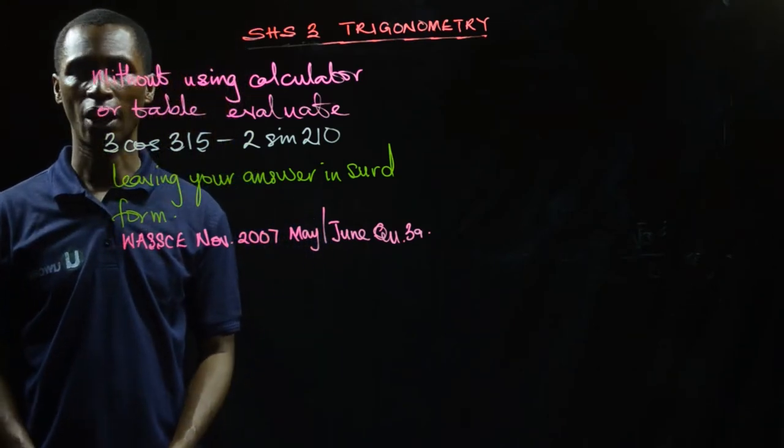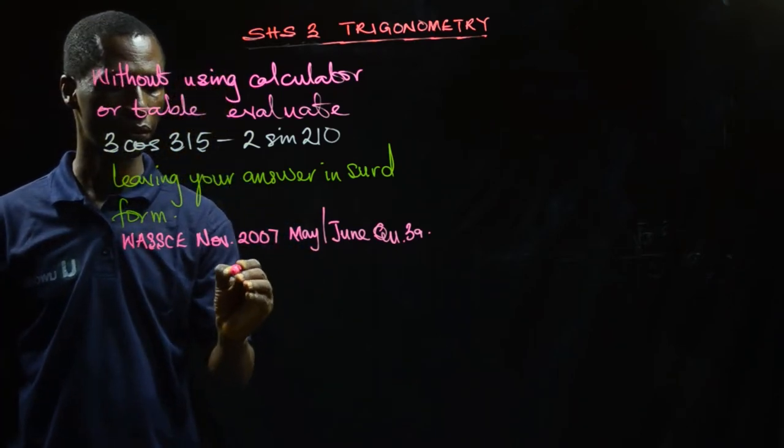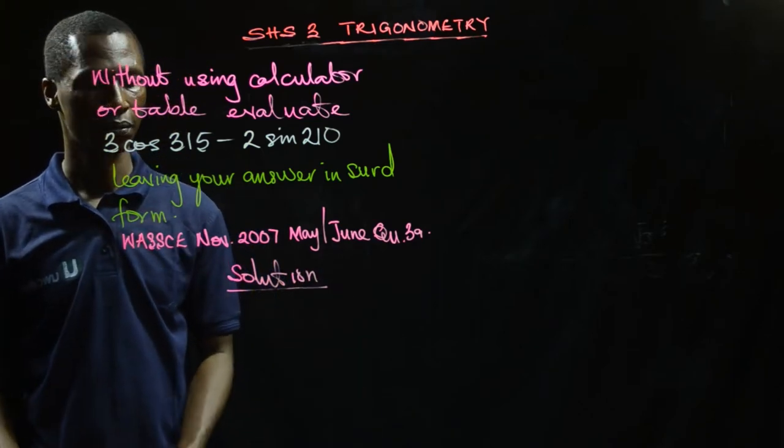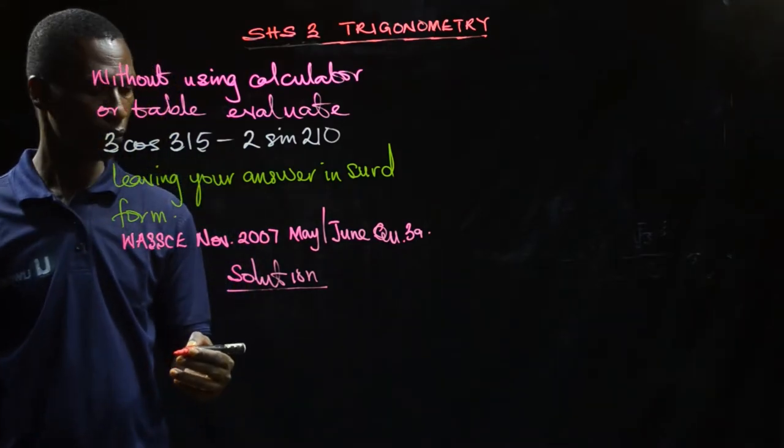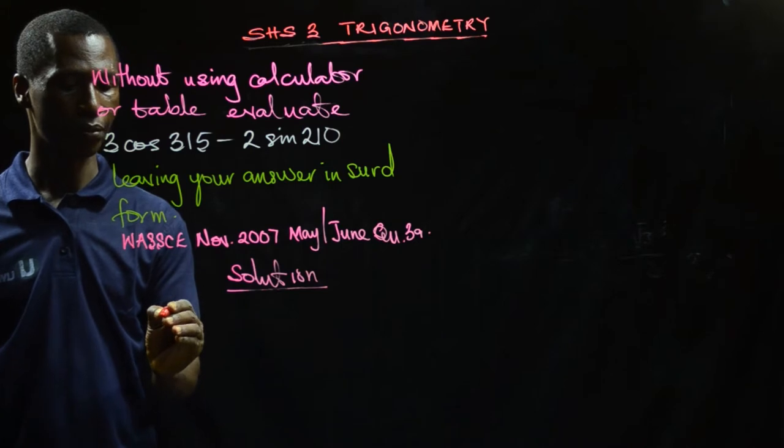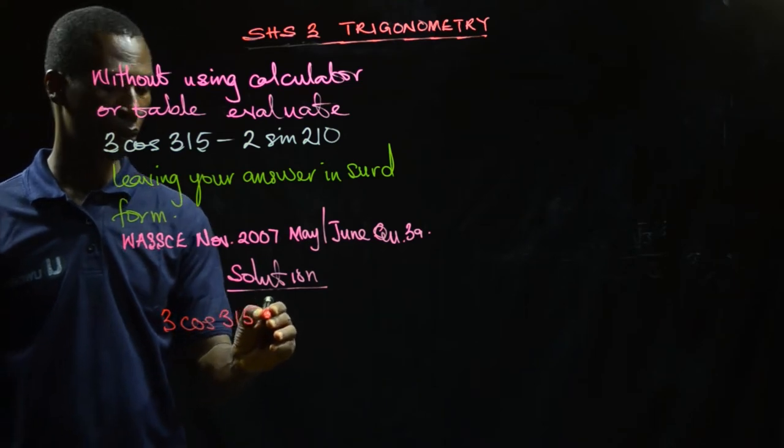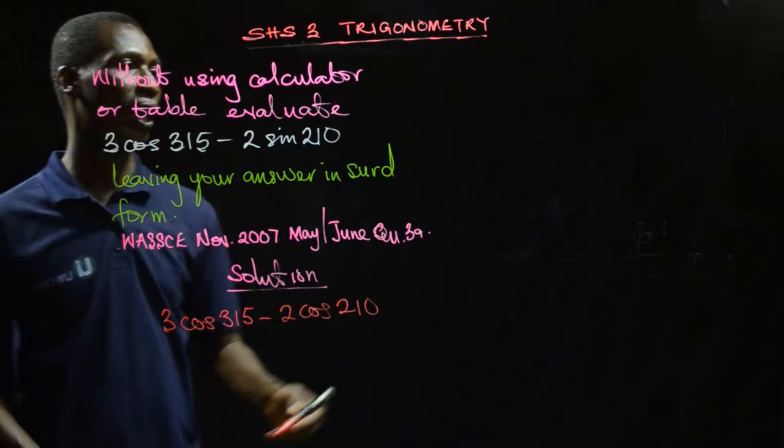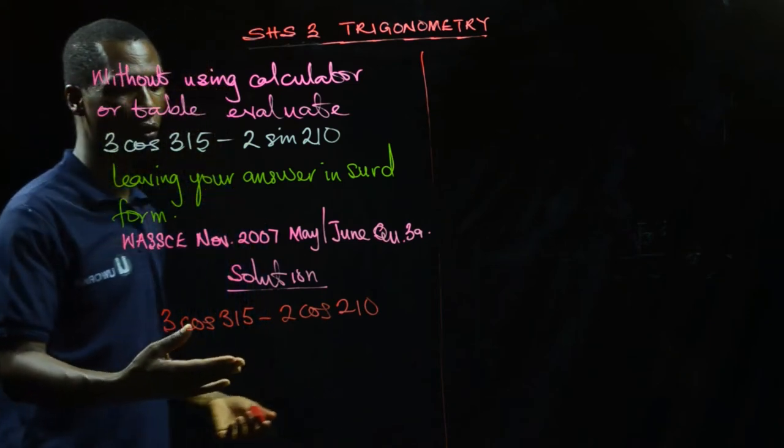In this case, with 315 and 210, the best thing to note is the CAST method. Let us write the question. Solution. So we have 3cos(315°) - 2sin(210°). Drawing the CAST diagram is very necessary at this point. We'll draw it and use it to solve the question.